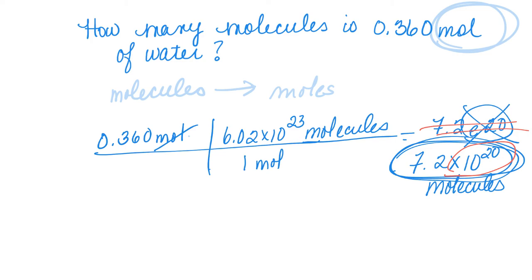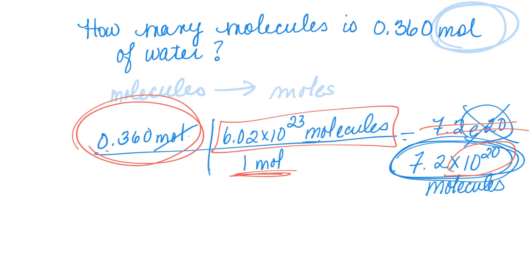Now, does this answer make sense? Absolutely. Because we're saying 1 mole is equivalent to 6.02 times 10 to the 23rd molecules. But in this case, what did we start with? We started with less than 1 mole of water. We started with 0.36. So having an exponent less than times 10 to the 23rd makes sense.